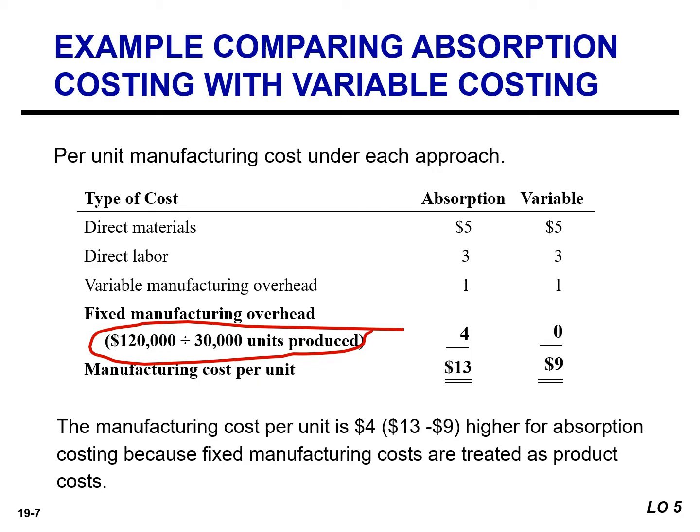The manufacturing cost per unit is $4 higher for absorption costing. This occurs because the fixed manufacturing overhead costs are a product cost under absorption costing, whereas under variable costing we treat it as a period cost. Based on this data, each unit sold and each unit remaining in inventory will be costed under absorption costing at $13, but under variable costing at $9.